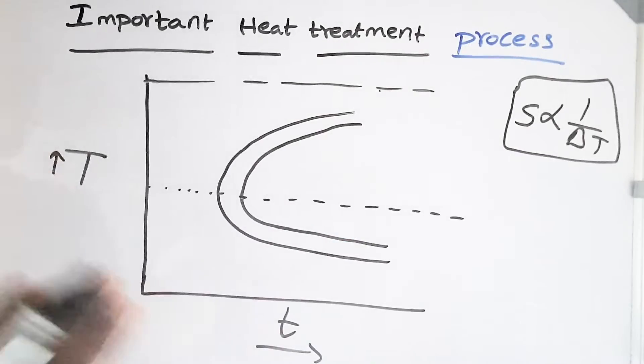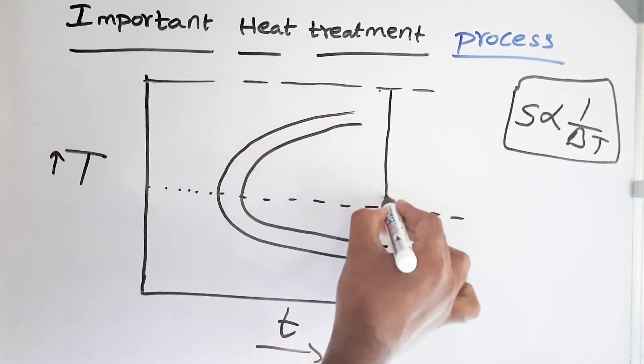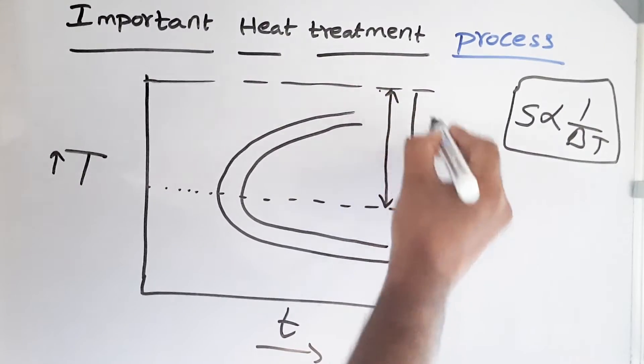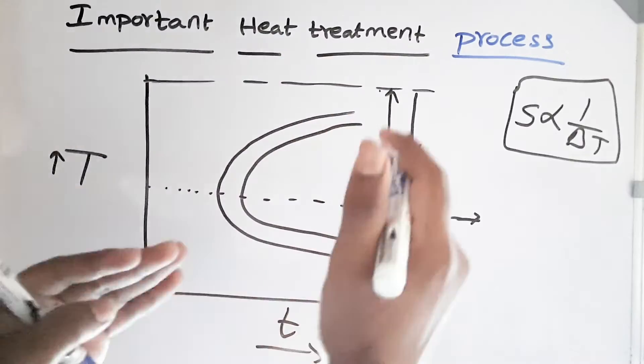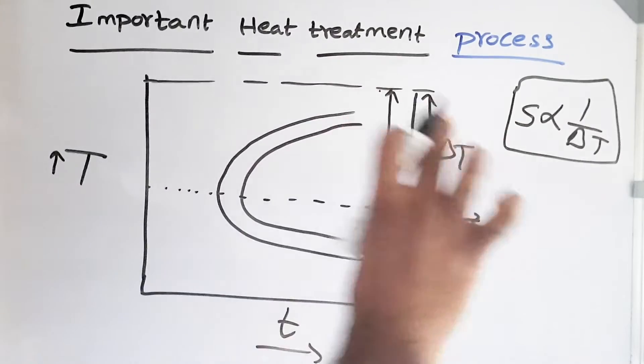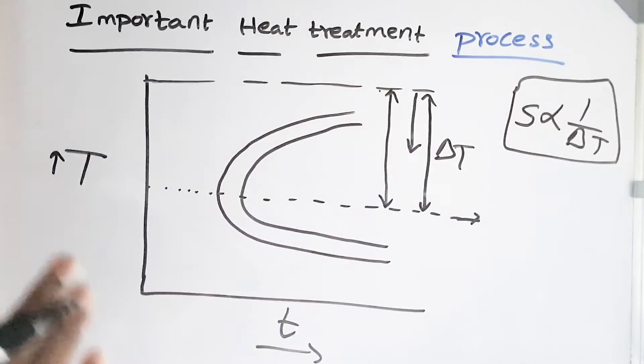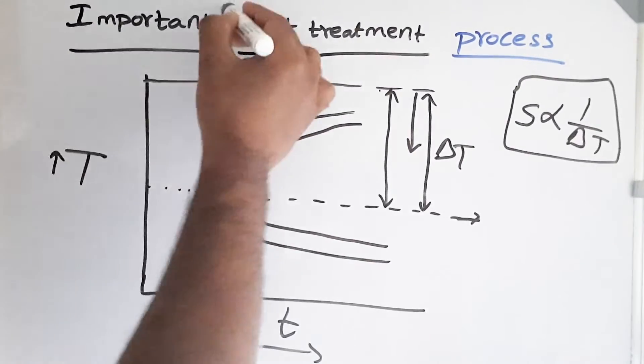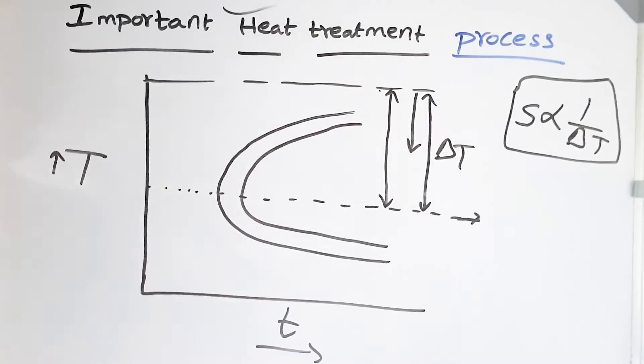So friends, as we know delta T is applicable until this part. So from this point to this point, we are reaching to the maximum delta T. Structure becomes finer and finer. So the maximum finest possible structure we can get at this delta T. This is the maximum undercooling at which we get the finest possible structure. So friends, this is the principle behind the important heat treatment we call patenting.